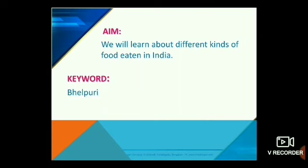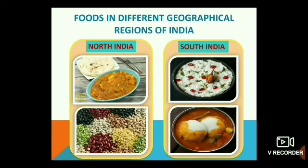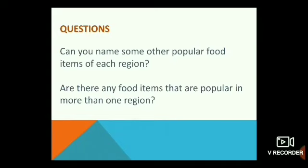What food items are popular in different geographical regions of India? Chapati, paneer, pulses, and meat dishes are very popular in North India. Curd rice, idli, and sambar are very popular in South India. Pav bhaji, bhel puri, and fish curry are popular in West India. Rasgulla, rice, and fish curry are popular in East India.